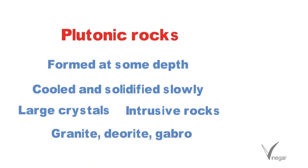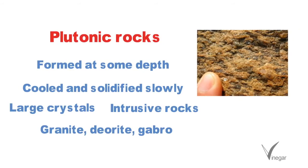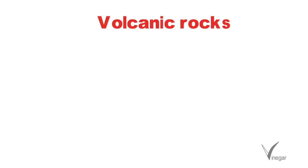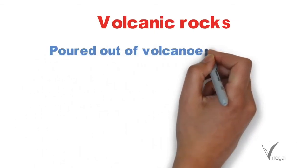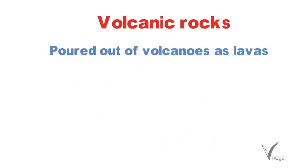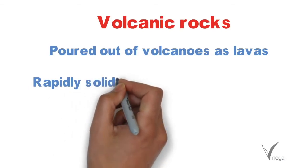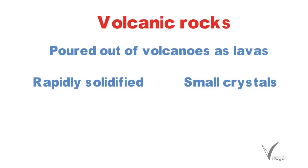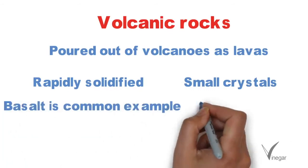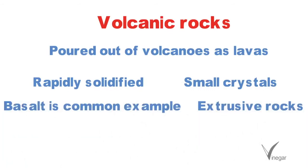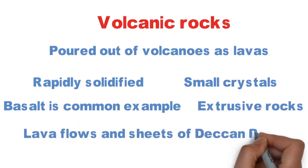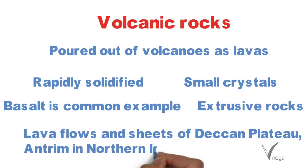Plutonic rocks are exposed to the Earth's surface after denudation or erosion. The second category of igneous rocks is volcanic rocks. These are formed by the lava poured out of volcanoes and are formed by rapid cooling and solidification, so the crystals are smaller. Basalt is a common example of such rocks. These are called extrusive rocks.